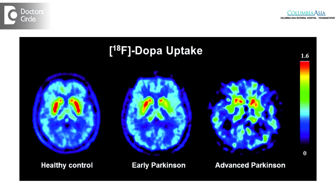Then we take the help of nuclear scans like DAT scan or PET scans, where you can see decreased uptake of dopamine in the basal ganglia in patients with Parkinson's disease. So we take the help of nuclear scan or imaging for early diagnosis of Parkinson's disease.